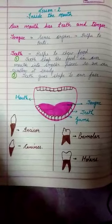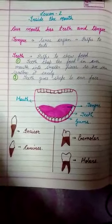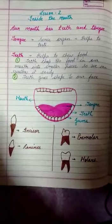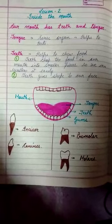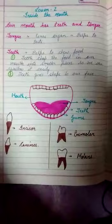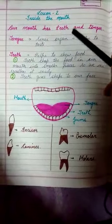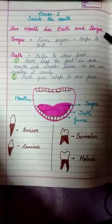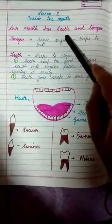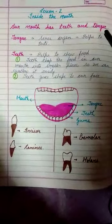Good morning children, today we will study our next topic that is inside our mouth, lesson 2 in your previous book. As we have already studied that our mouth has teeth and tongue. Humarey mouth ke andar teeth hoti hai, teeth hoti hai aur tongue hoti hai.